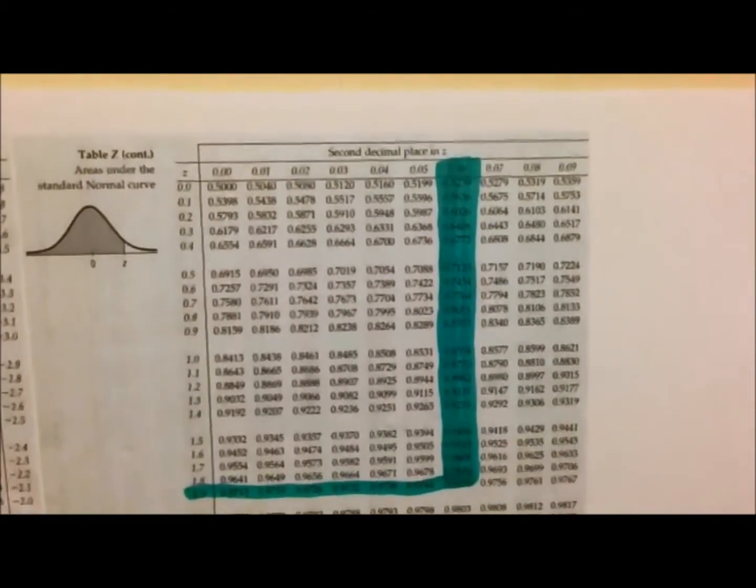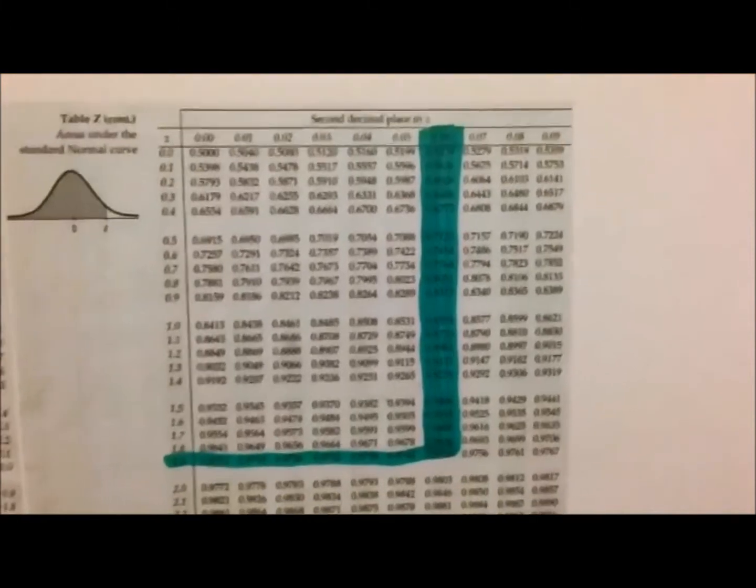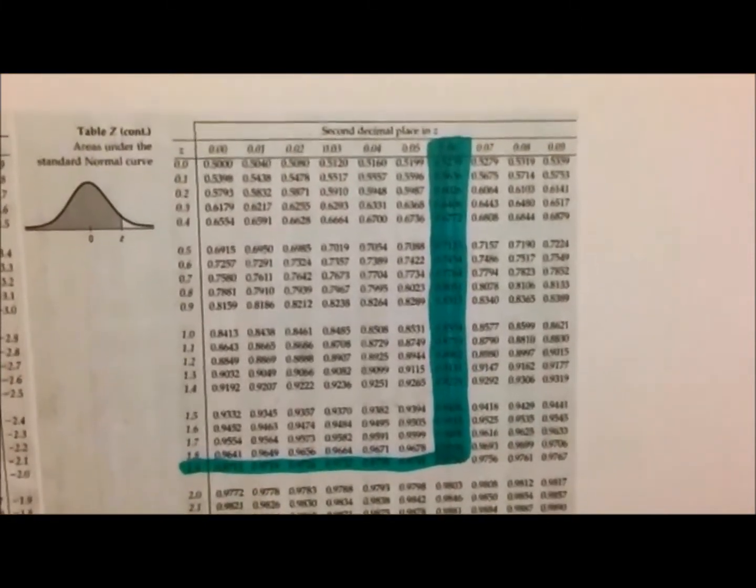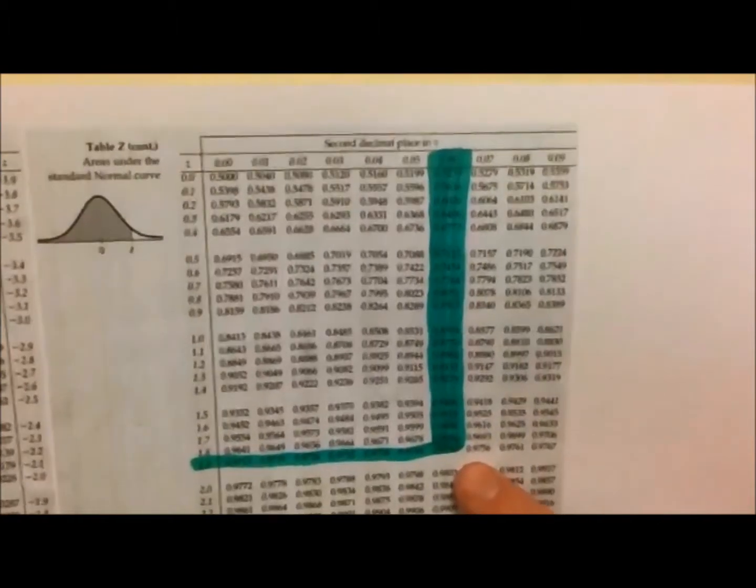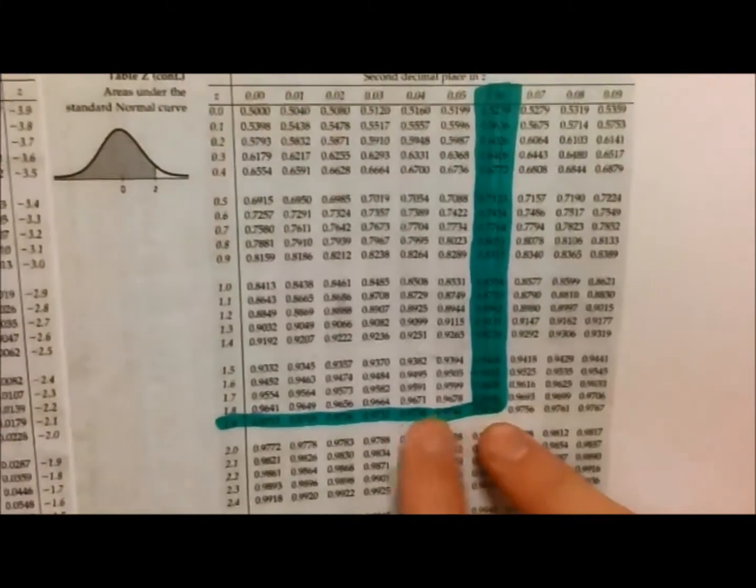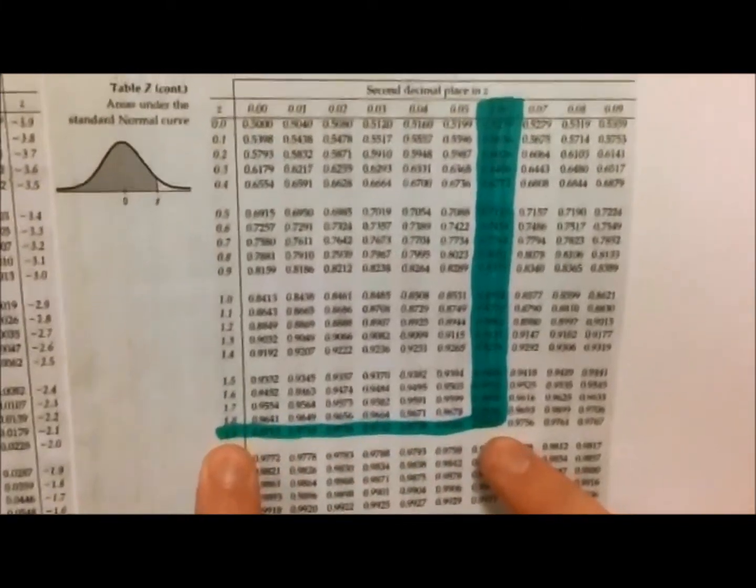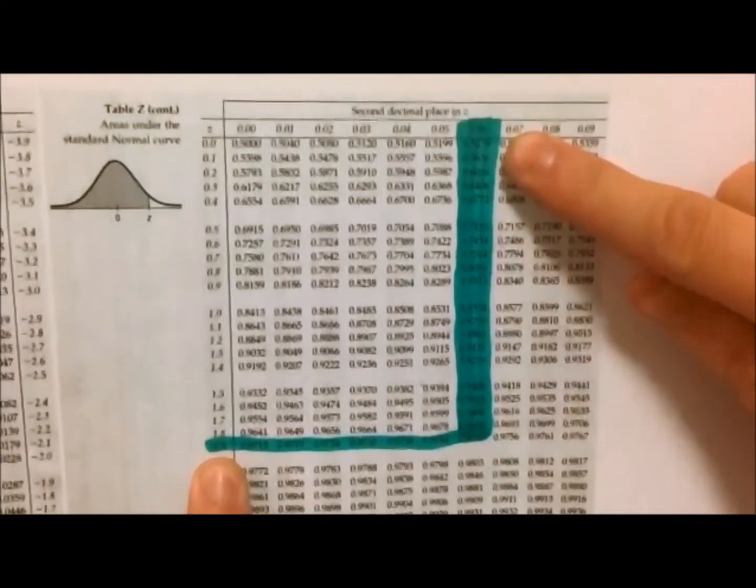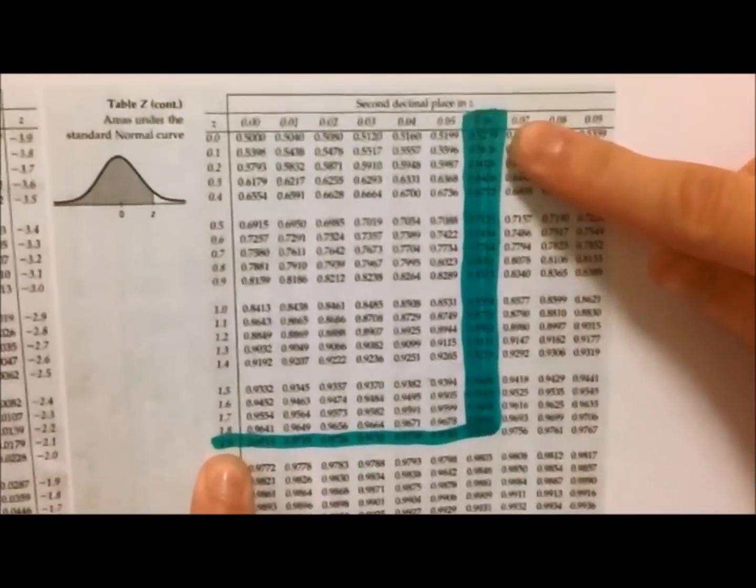Since our alpha value is 0.05, we divide this by 2 and deduct this from 1, therefore finding 0.9750 on the table. As you can see, if you go across the table, you get the value of 1.9 and as you go to the top, you get 0.06. Adding these two values together gives us 1.96.